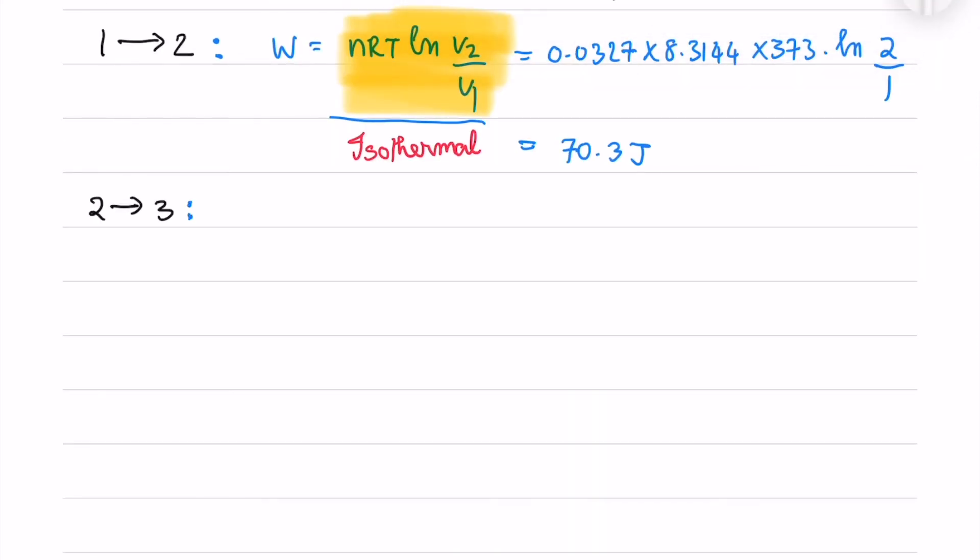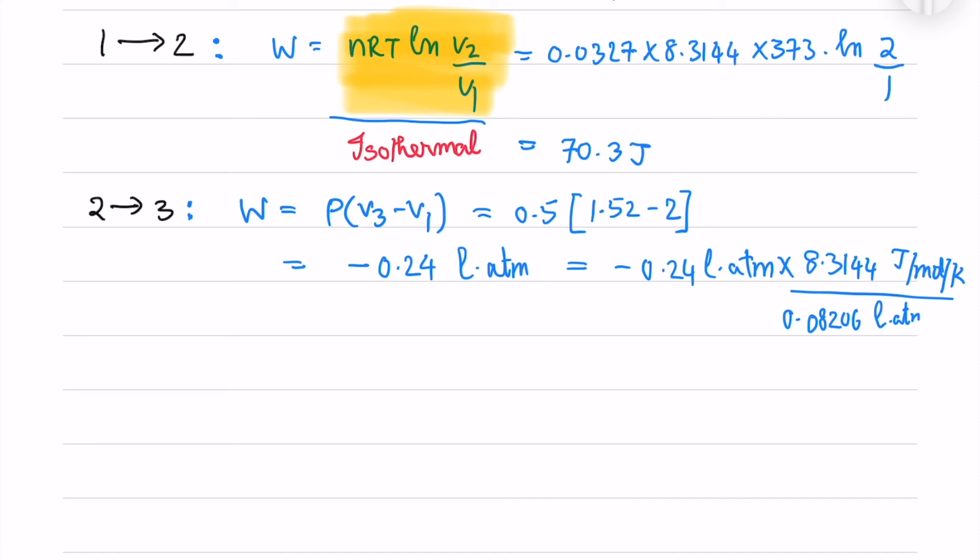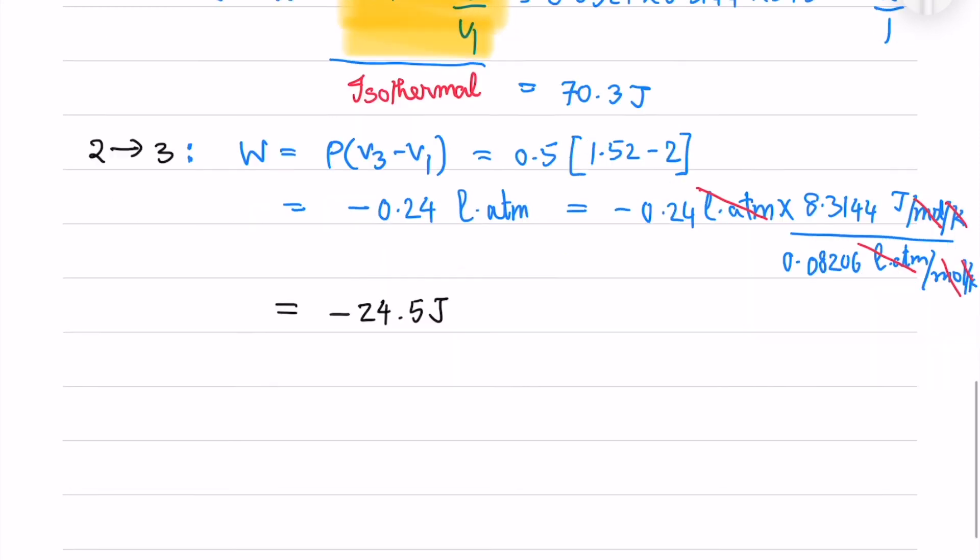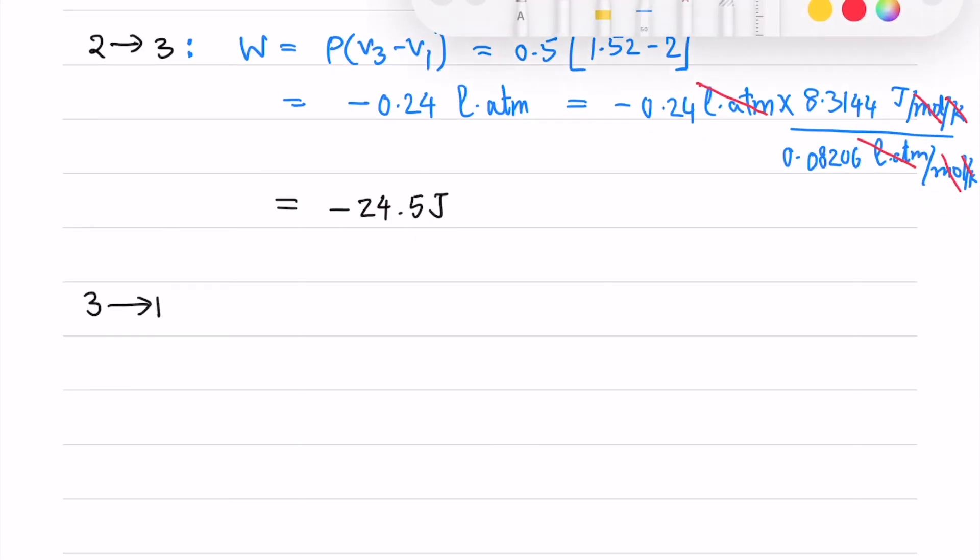Now for the constant pressure process, the work done is P into delta V. So I will get 0.24 liter atmospheres which I will convert into joules using the gas constant. I have the gas constant in joule per mole kelvin and liter atmospheres per mole kelvin and I will obtain the work done in joules.